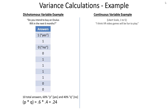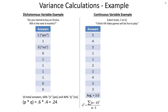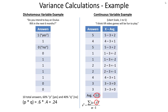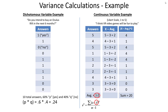For a continuous variable example, imagine a Likert scale going from 1 to 5 — an agreement scale — and the question: 'I think VR video games will be fun to play.' We collect 10 responses coded 1 to 5, with a simple average of 3. The variance equation requires us to subtract the average from each observation, square each result, sum them all up, and divide by n minus 1. Here, 20 divided by 9 equals 2.22.